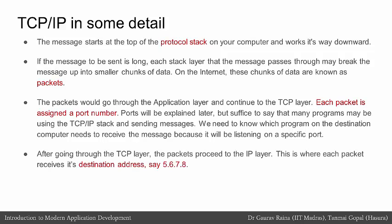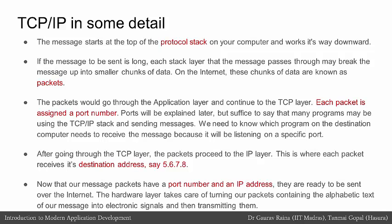After going through the TCP layer, the packets proceed to the IP layer, where each packet receives its destination address — for example, 5.6.7.8. Now that our packets have a port number and an IP address, they are ready to be sent over the internet. The hardware layer takes care of turning the packets into electronic signals and transmitting them.